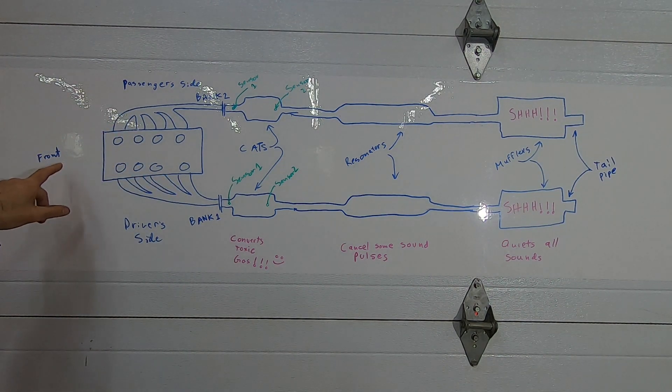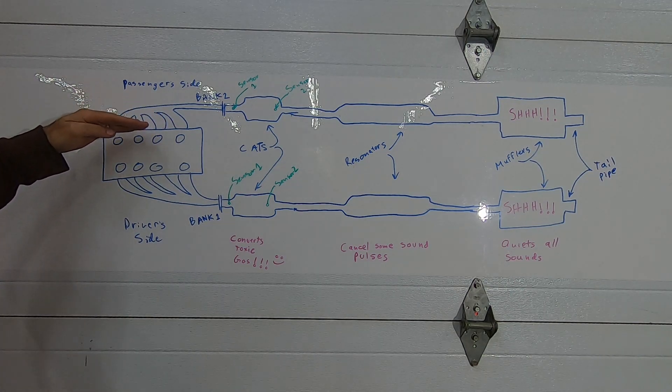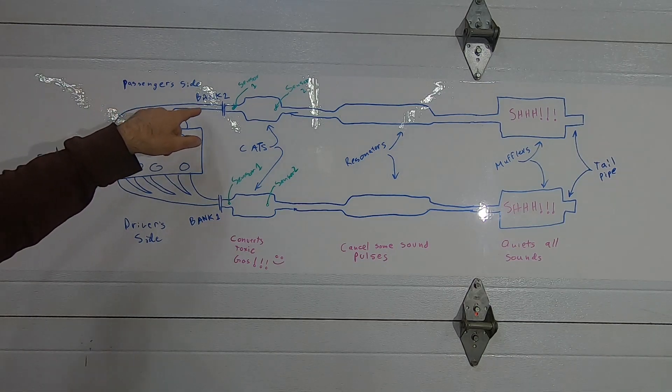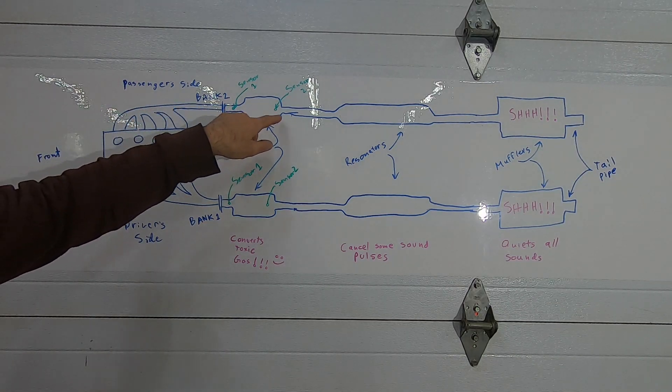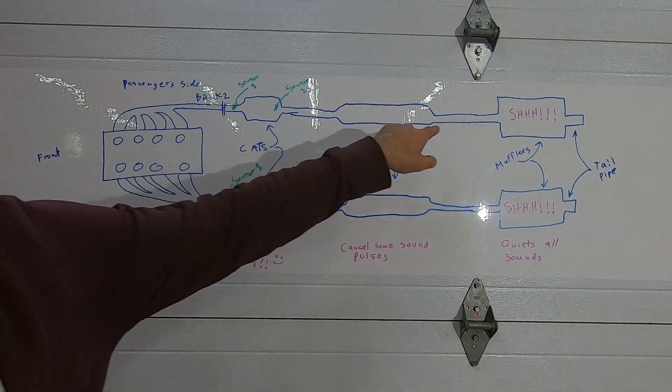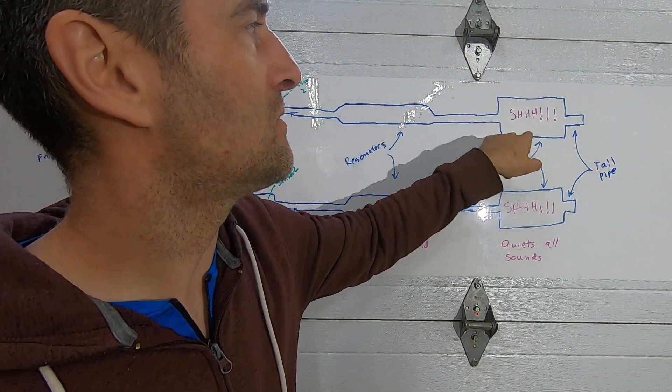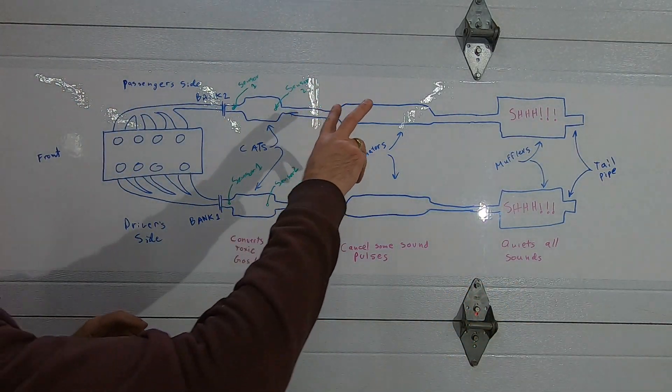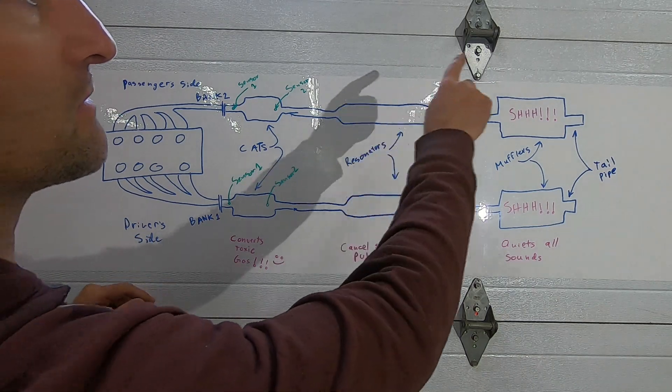On the sides of the block we have bolted the exhaust manifold, and it connects down to the catalytic converter. Then there's an exhaust pipe that connects to a resonator, and then an exhaust pipe that connects to a muffler and then the tail pipe.